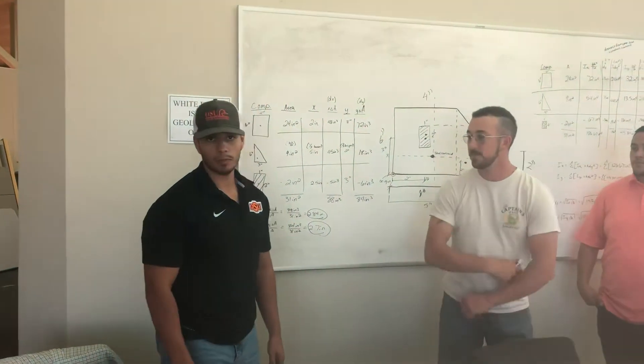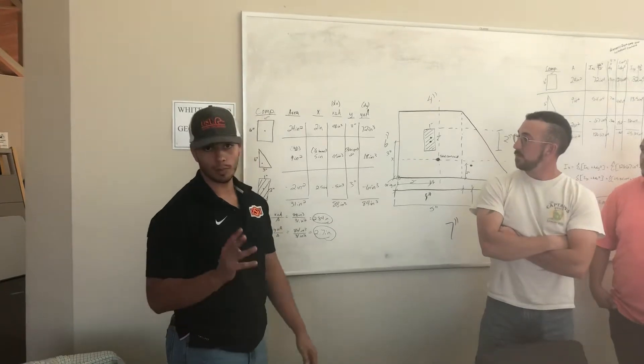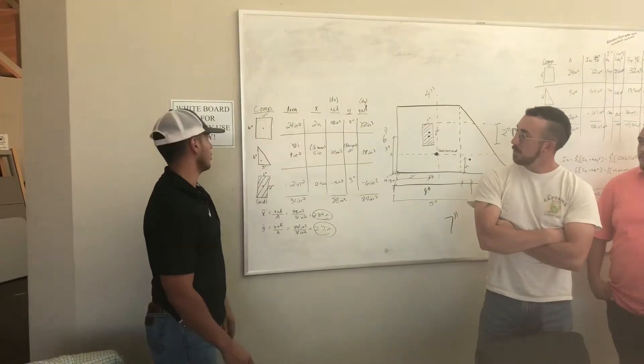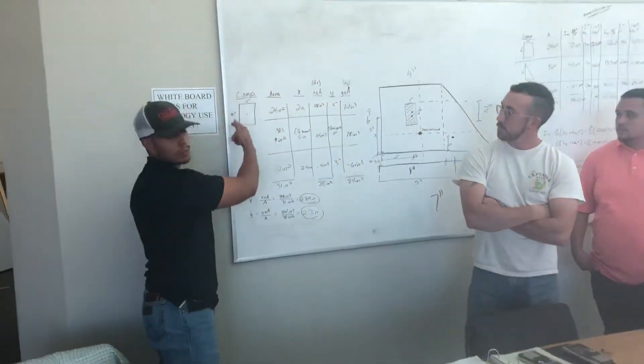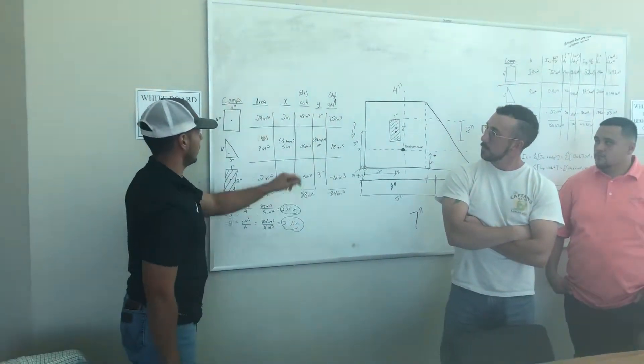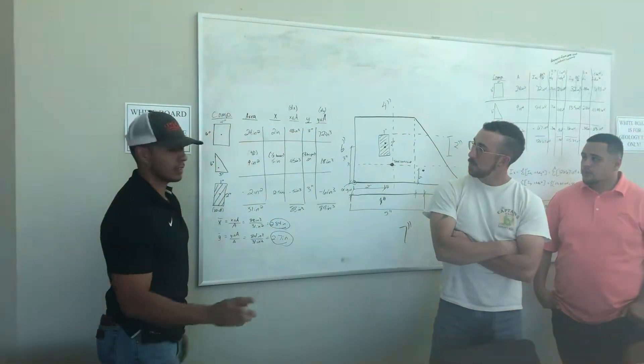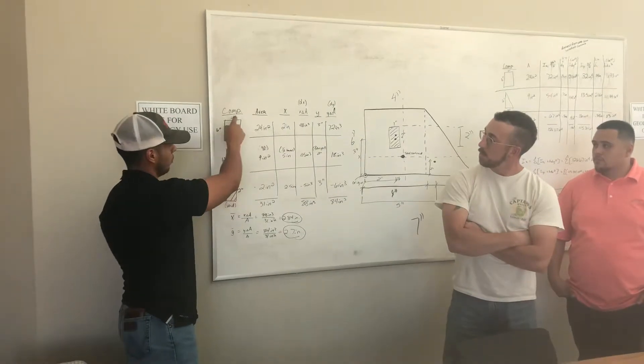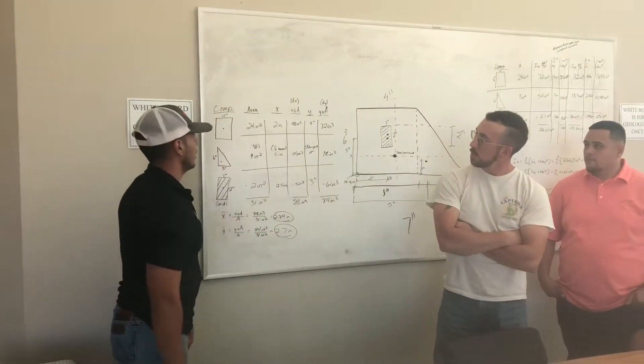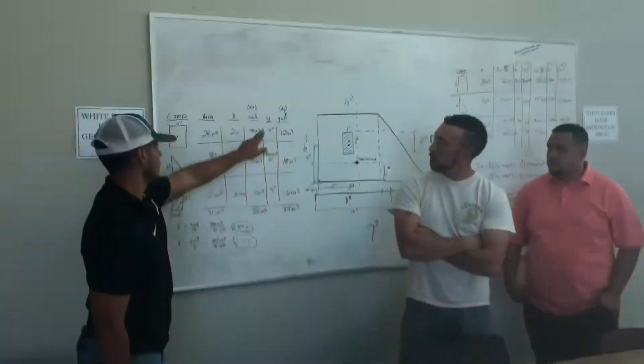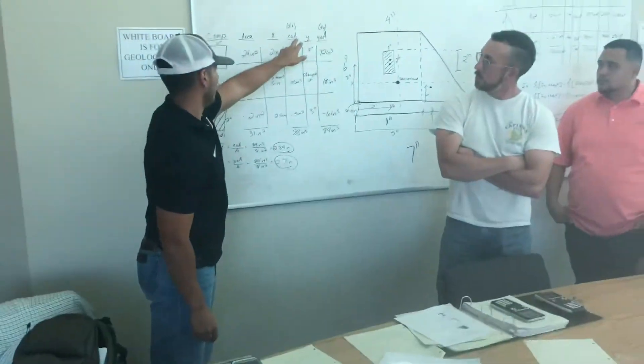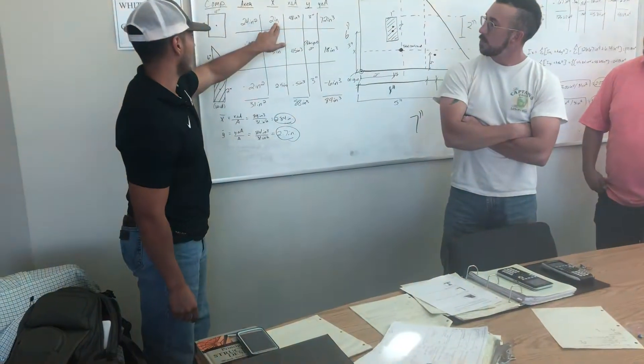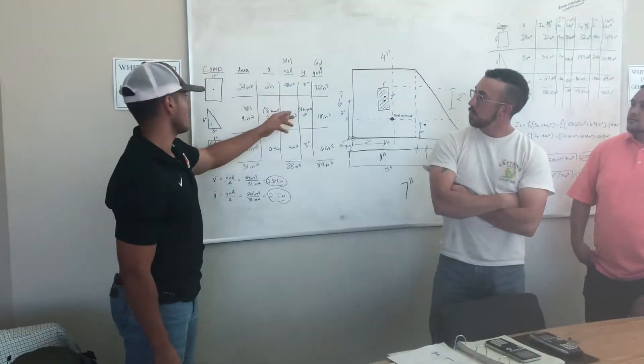The next part is breaking down our shapes into three different components. First, you want to find your area. You can easily do that by multiplying 4 times 6, which gives you 24. Then X is going to be the distance from its component to the center. So you divide 4 by 2, which gives you 2 inches. The next one is X times A. That can be accomplished by multiplying your area times your X, which would be 48 inches.